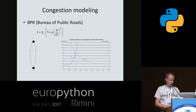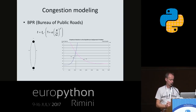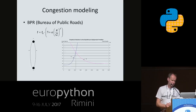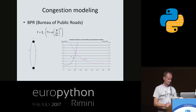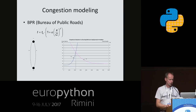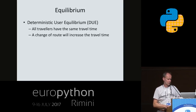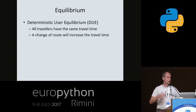The figure shows how we can find an equilibrium in the case where we have two links connecting two points with a fixed number of cars wanting to go from A to B. At the crossing point, the travel time on each of the links is the same. That means it doesn't make sense to change your route because everyone has the same travel time. That's the equilibrium we are going to look for — we want to find the assignment of traffic to each link such that every traveler has the same travel time. This is what we call the deterministic user equilibrium.